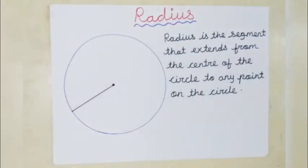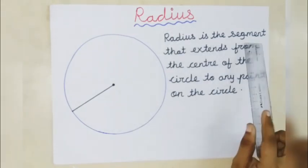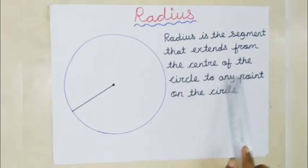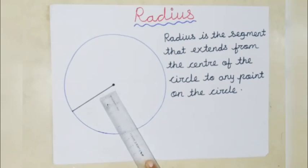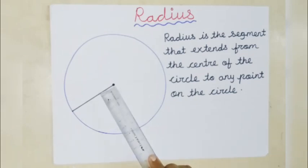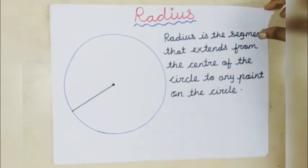Our next term is radius. Radius is the segment that extends from the center of the circle to any point on the circle. Any point on the circle we can draw, but it should be connected with the center. So this is the radius.